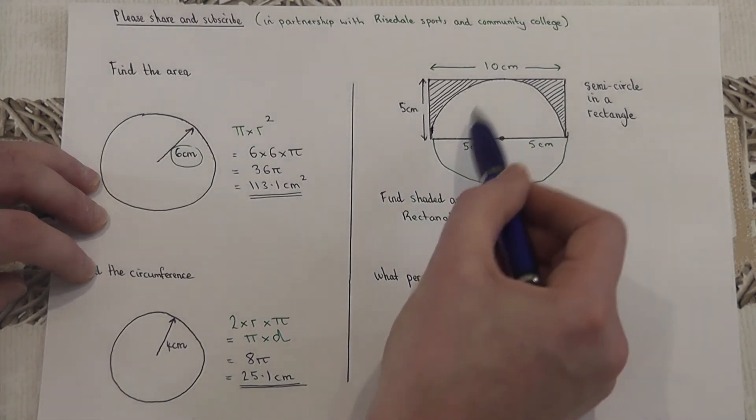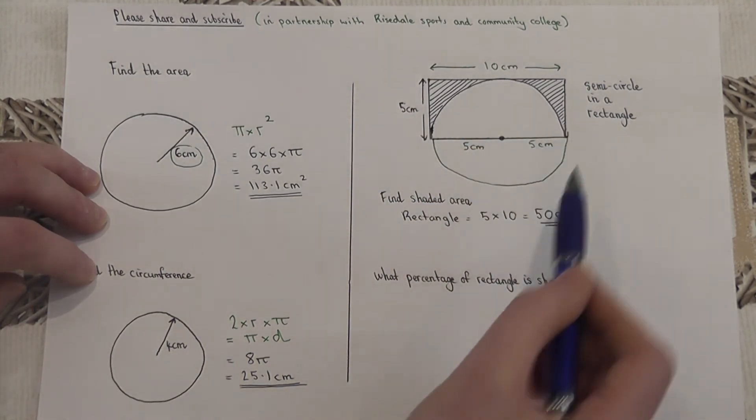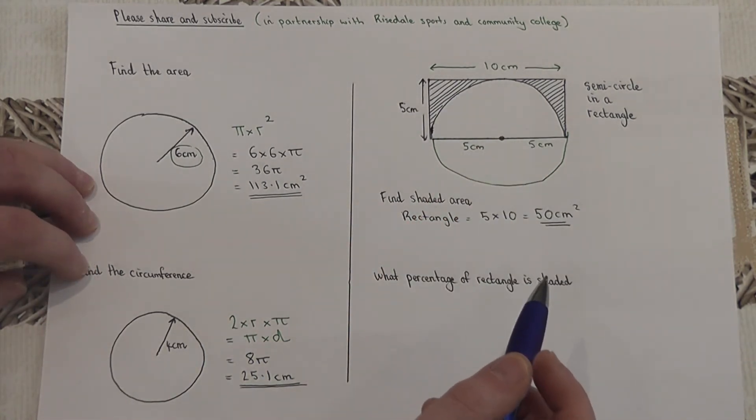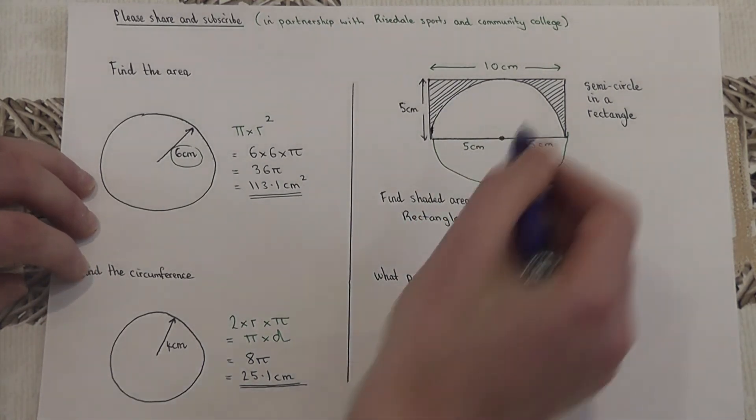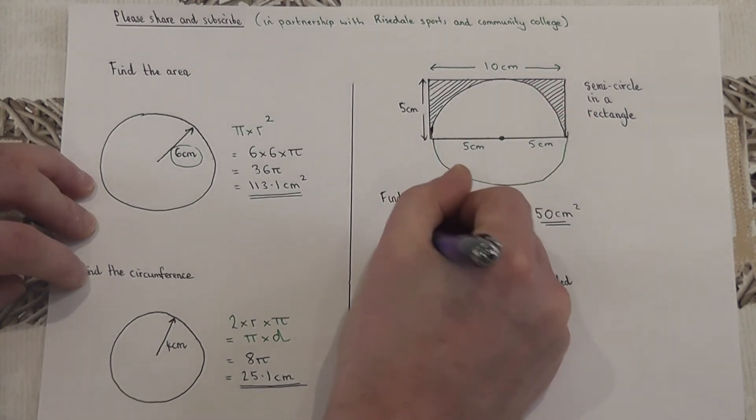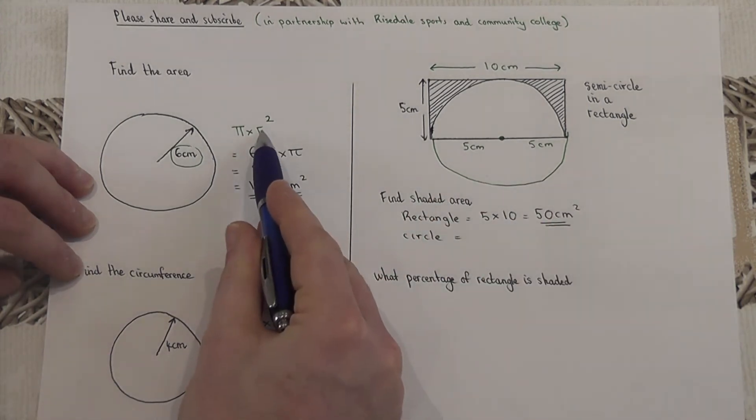Now I'm going to find out what the area of the semicircle is and then subtract that from the rectangle to get the leftover shaded area. Now then, what I'll do is I'm going to find the entire circle first of all. So the entire circle, we know, is pi times radius squared.